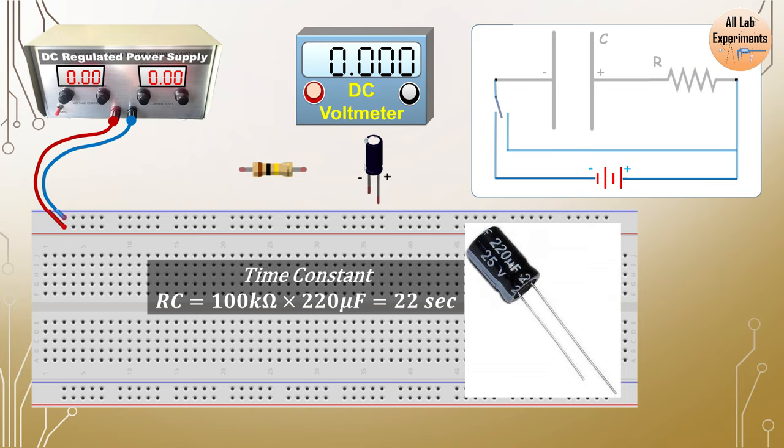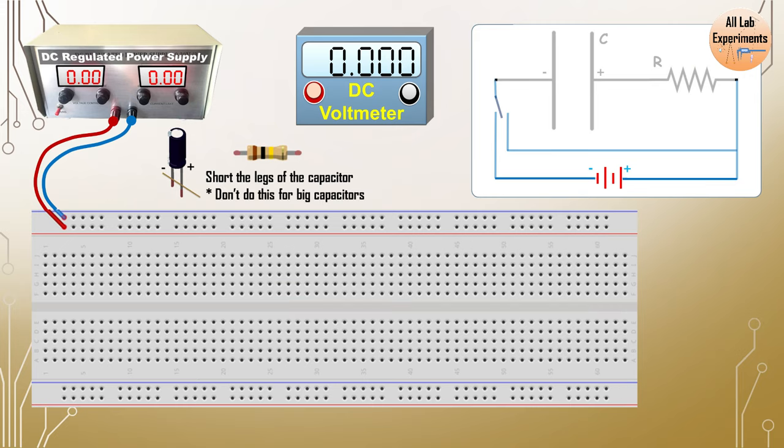There could be some charge on this capacitor, so just take some conducting wire and short the legs of this capacitor. You can do this for this small capacitor but don't do this for a big capacitor.